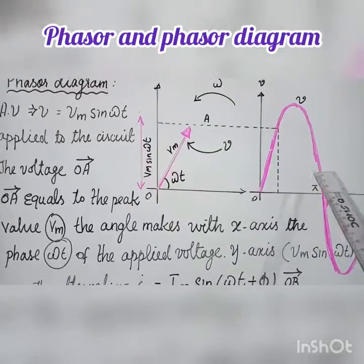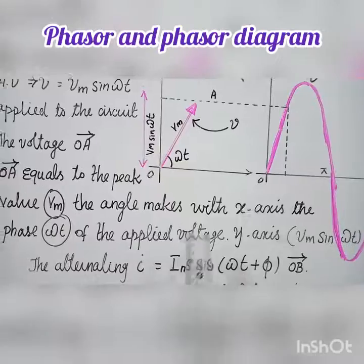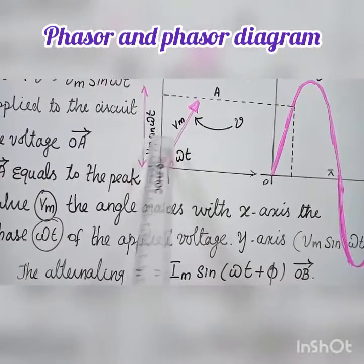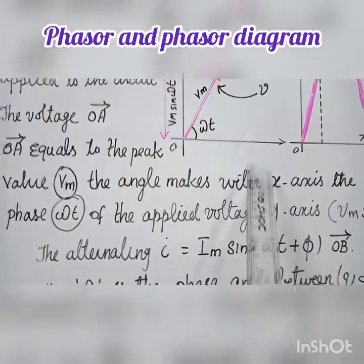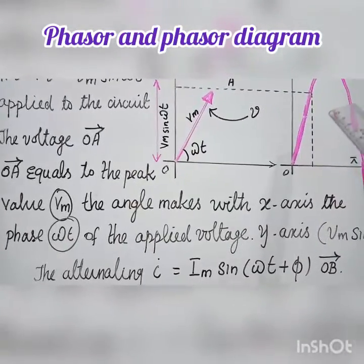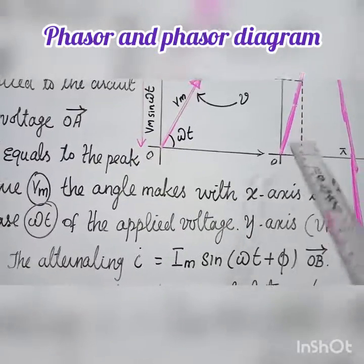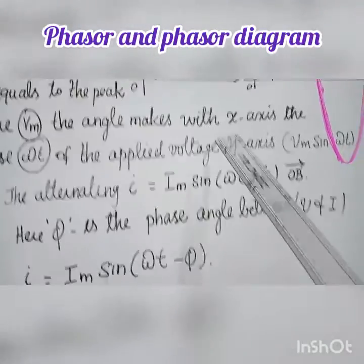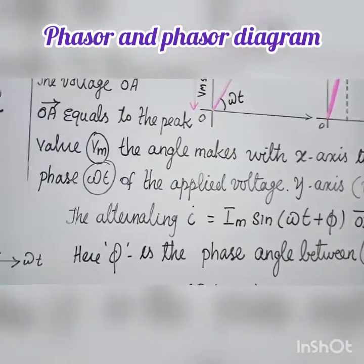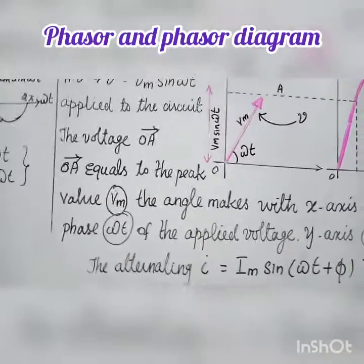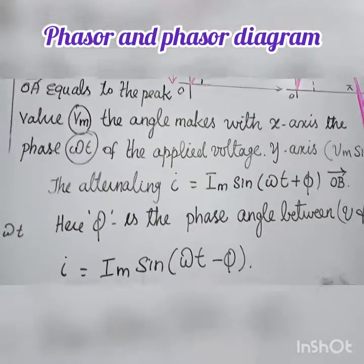Consider the sinusoidal alternating voltage V = V_m sin(ωt) applied to a circuit. This voltage can be represented by the Oa vector, where Oa equals the peak maximum voltage. The vector is aligned along the x-axis at angle ωt. The projection onto the y-axis provides the instantaneous value V_m sin(ωt). The Oa vector rotates about O with angular velocity ω in the anticlockwise direction, generating the voltage waveform. For one full rotation of the Oa vector, one complete cycle of voltage is produced.